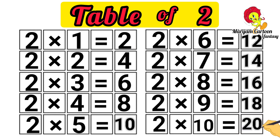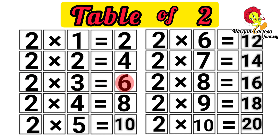2 1's are 2, 2 2's are 4, 2 3's are 6, 2 4's are 8, 2 5's are 10.